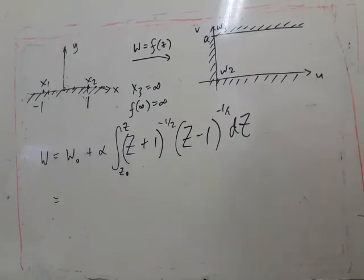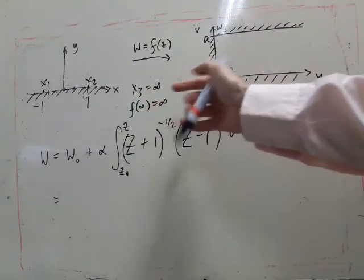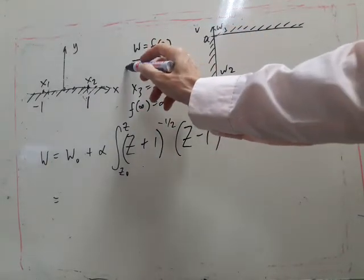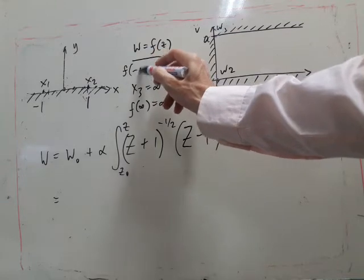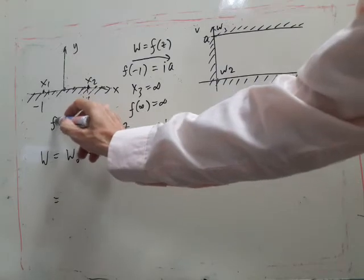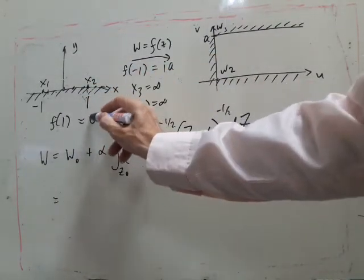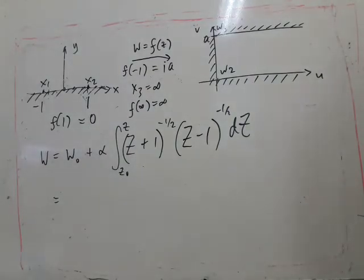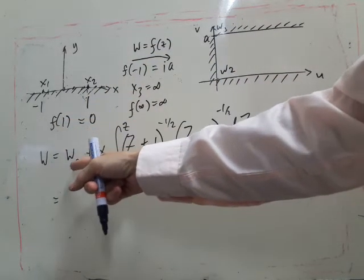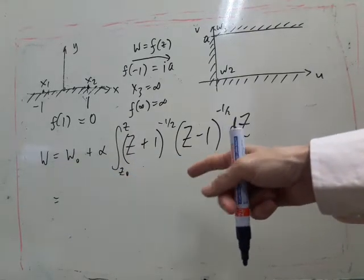So let's write down the other information we have. We've got what f of infinity is. We now know that f of minus one needs to be ia and f of one gets mapped to zero.